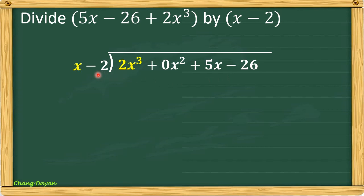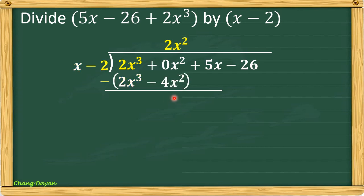Divide 2x cubed by x — we get 2x squared. Next, multiply: 2x squared times x gives 2x cubed. Then 2x squared times negative 2 gives negative 4x squared. Proceed to subtraction: 2x cubed minus 2x cubed is 0. 0x squared minus negative 4x squared — change the sign and add — giving positive 4x squared. Bring down 5x.